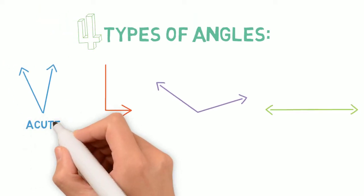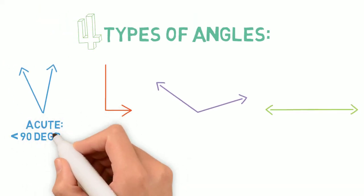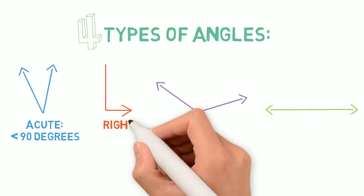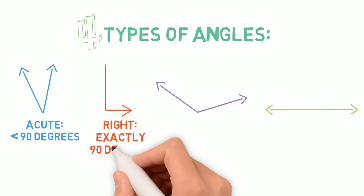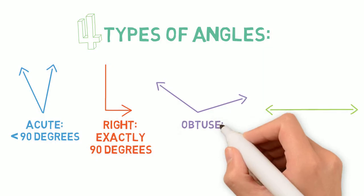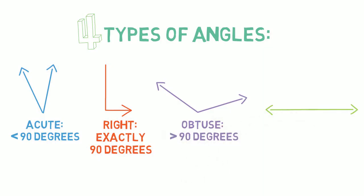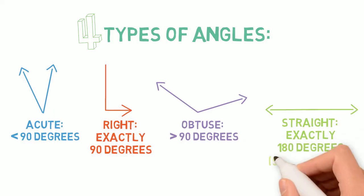An acute angle is any angle less than 90 degrees. A right angle has to be exactly 90 degrees, no more, no less. An obtuse angle is any angle greater than 90 degrees, and a straight angle has to be exactly 180 degrees, forming a straight line.